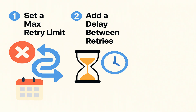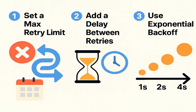An even better approach is to increase the wait time after every retry — first wait 1 second, then 2 seconds, then 4 seconds, and so on. This is called exponential backoff. It gives the failing service more time to recover and avoids putting pressure on it again and again too quickly.